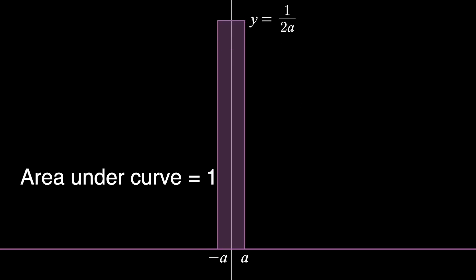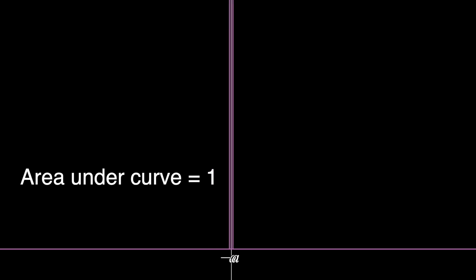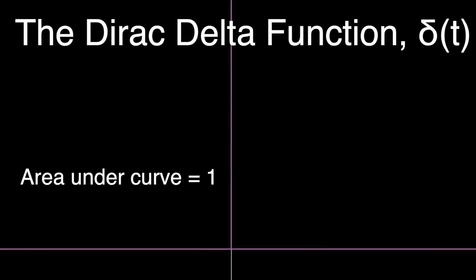As a gets infinitely small, the function essentially becomes a single spike with infinite height and no width. And this here is known as the Dirac delta function, written lowercase delta of t. It's zero everywhere except at t equals zero where it's infinity. And although infinitely skinny, it has an area of one.